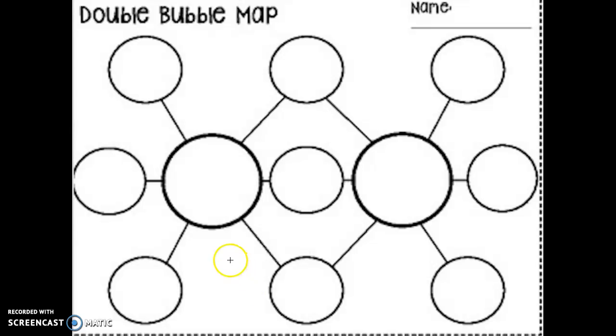So how you're going to do that is you're going to put Cinderella here, you're going to put Prince Cinders here, and then you're going to look at your plot diagram and think, hmm, what are the things that they have in common? That's going to be here.